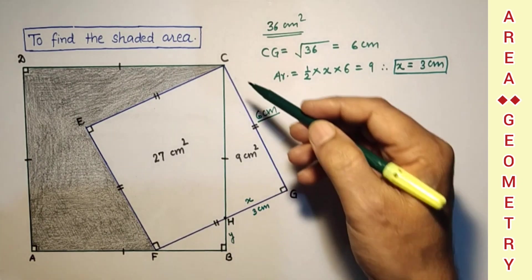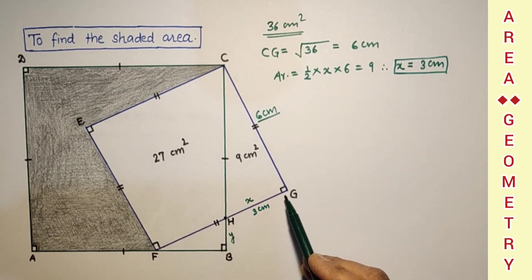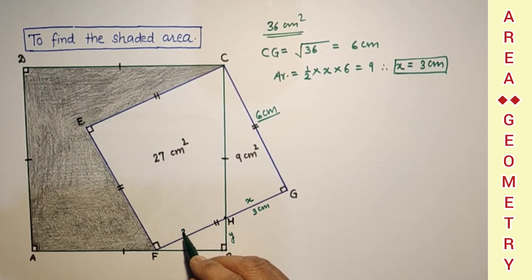As we know that CG is 6 cm, therefore GF is also 6 cm. And this we found 3 cm. So this remaining FH is equal to 3 cm.